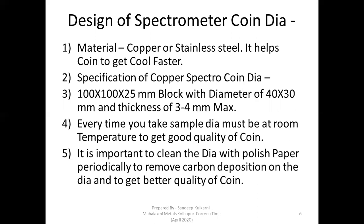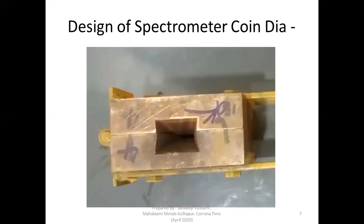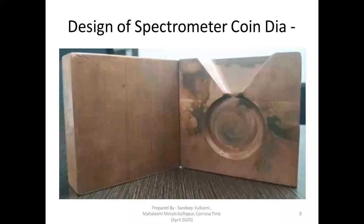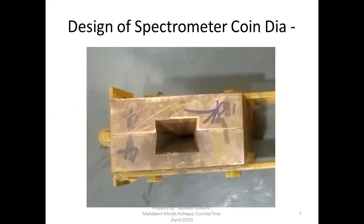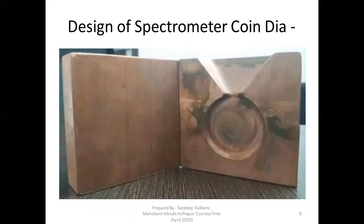This is a picture of how the proper die should look. As I mentioned, the block should be 100 × 100 × 25mm, with the coin diameter of 40 × 30mm, and the thickness should be 3 to 4mm.